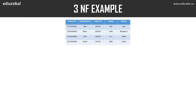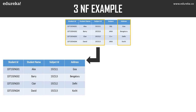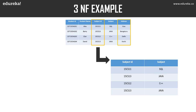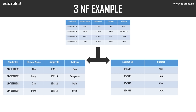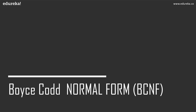To achieve third normal form, we divide the table. The first table stores student ID, student name, subject ID, and address — all columns refer to the primary key, student ID. The second table has subject ID and subject — subject is dependent only on subject ID, not on student ID. All non-key attributes are now fully functionally dependent only on the primary key in their respective tables, satisfying third normal form.